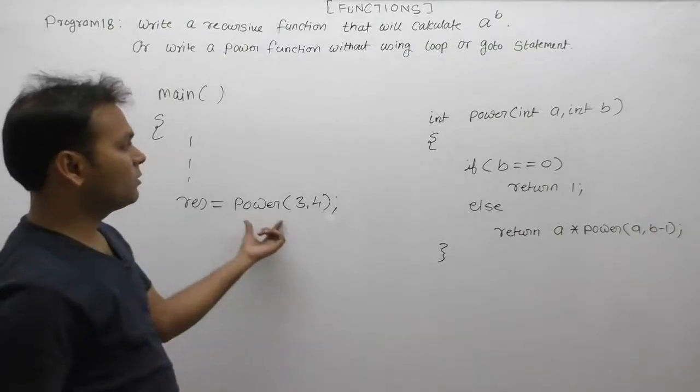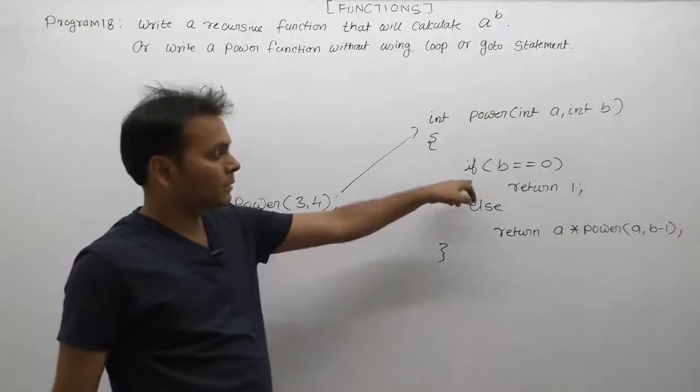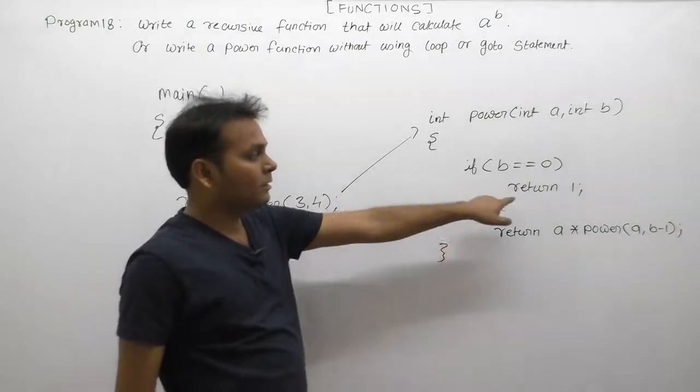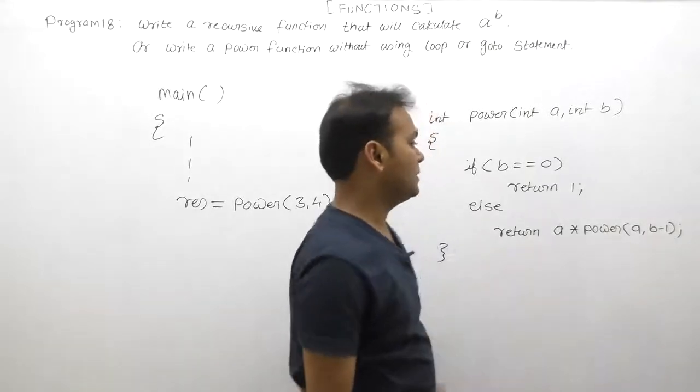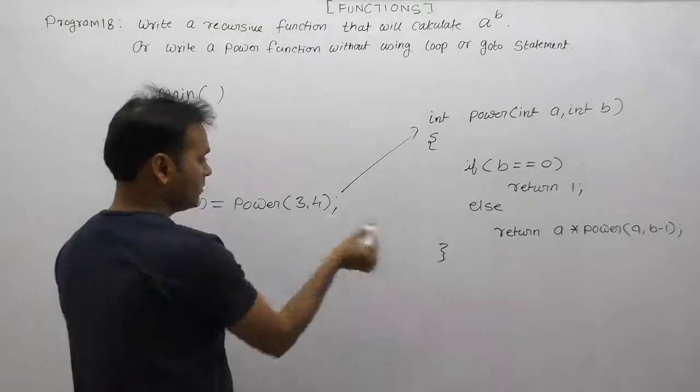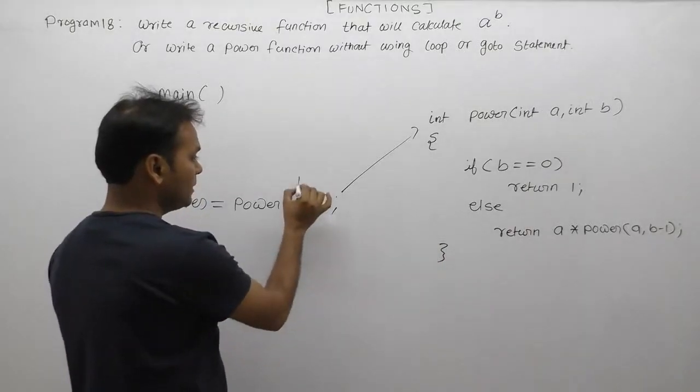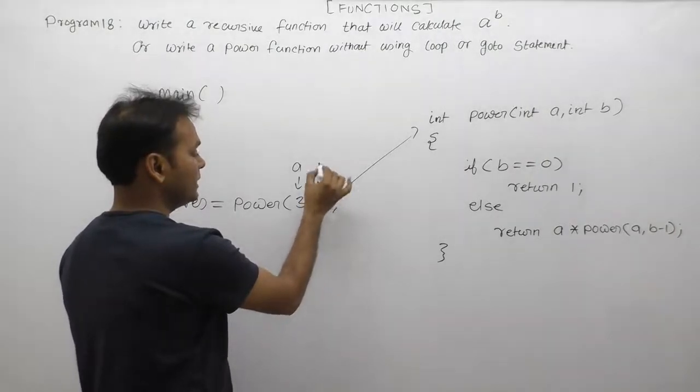When we call the function, it will immediately return a result. The return is either directly 1 or the result of an expression. Initially, 3 is assigned to parameter a and 4 is the value of parameter b.